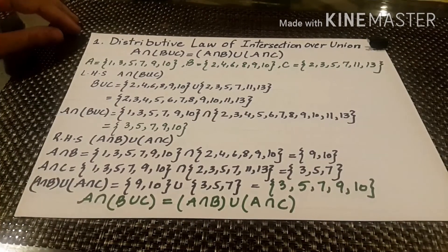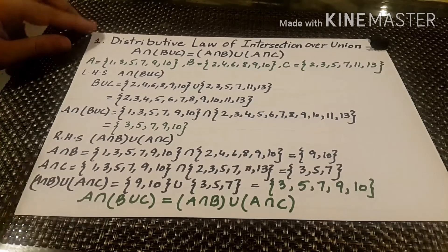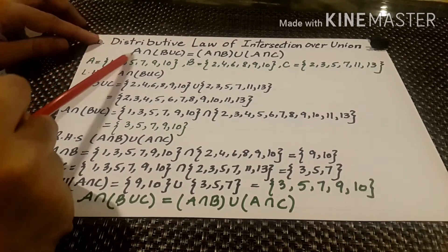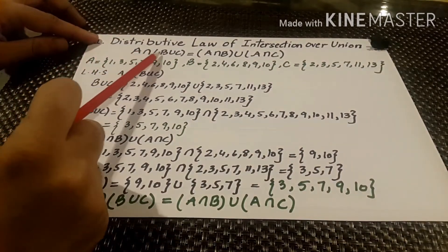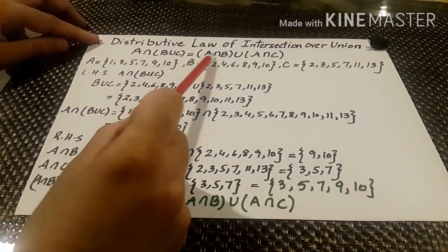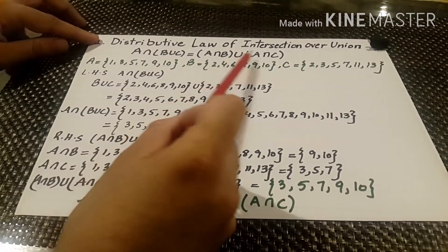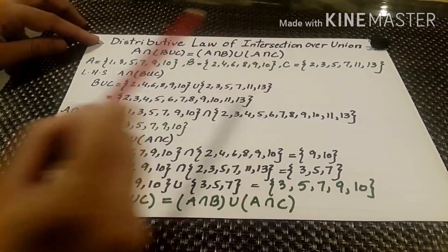Distributive law of intersection over union. The law states: A intersection (B union C) is equal to A intersection B union A intersection C.